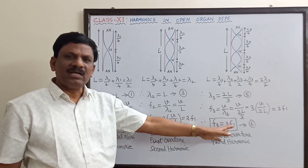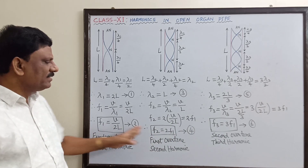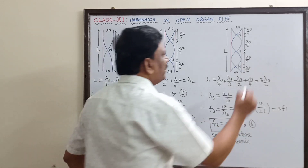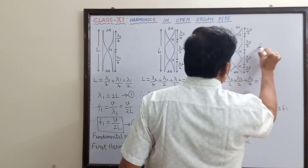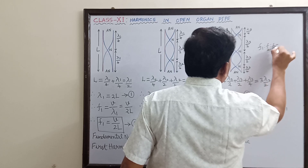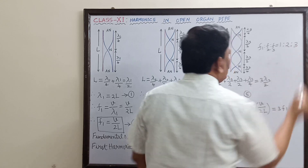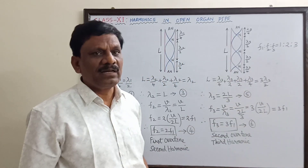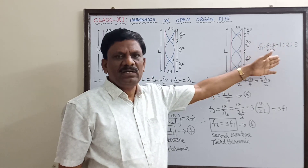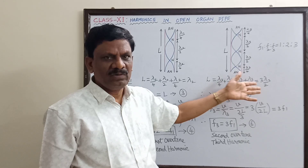Looking at the first, second, and third harmonics, they are in the ratio f₁ : f₂ : f₃ = 1 : 2 : 3. In the case of the closed organ pipe, all even harmonics were absent, but here in the open organ pipe all harmonics are available.